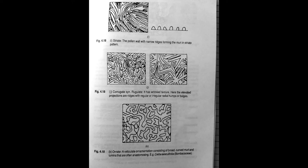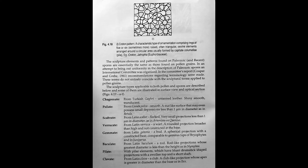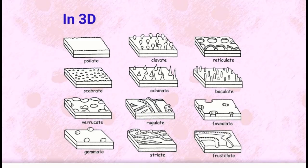And finally, we have the croton pattern. A characteristic type of ornamentation comprising rings of five or six or sometimes more raised, often triangular, sexine elements arranged around a circular area, usually formed by capitate columellae or pila. This is found in Jatropha curcas of Euphorbiaceae family.